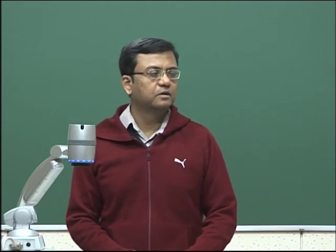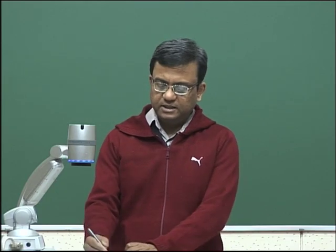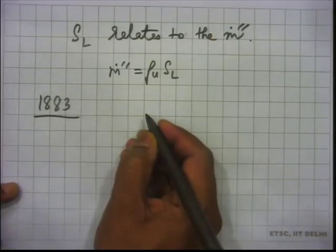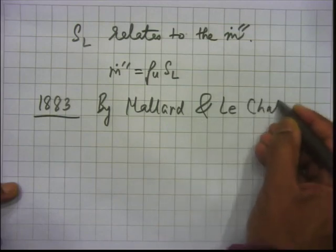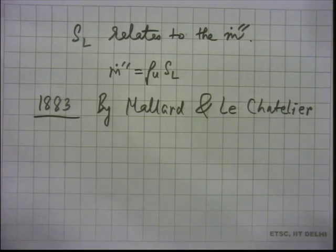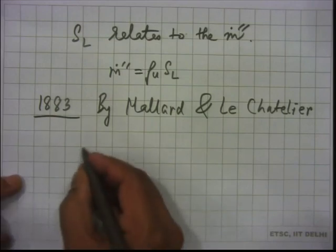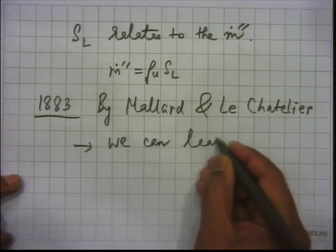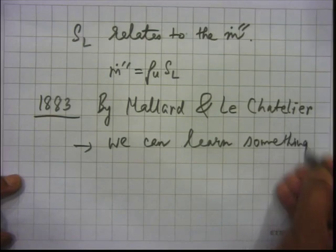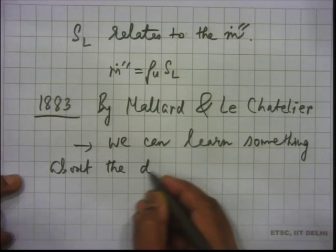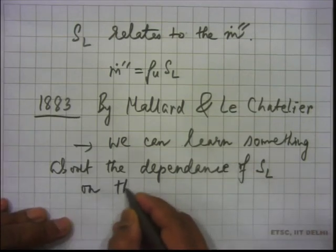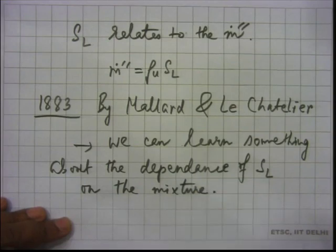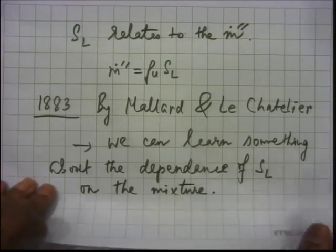For S_L, we will do two kinds of theories. One is a very old theory given in 1883 by two gentlemen — Mallard and Le Chatelier. This is the simplest possible theory, called the thermal theory of laminar premixed flames. With the help of this theory, we can learn something about the dependence of S_L on the mixture.